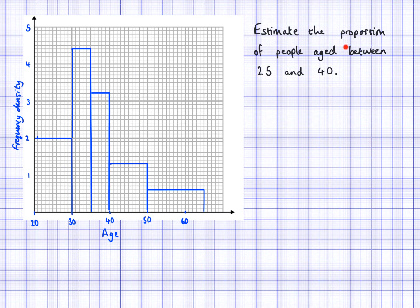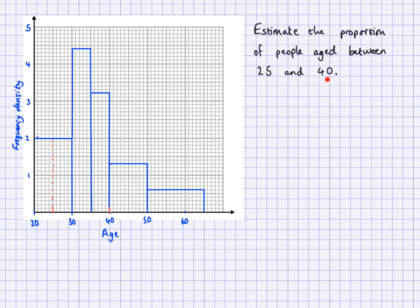Here's a question: estimate the proportion of people aged between 25 and 40. You might be asked proportion or the number of people. Proportion means you'd have to find the total number of people — that would be the area of all of these bars — and that would be at the bottom of your fraction, with the number of people between 25 and 40 at the top. So what you need to do is find 25 and 40 on this scale. Going up from 25, the number of people between 25 and 40 would be the area of these two bars plus this section here.